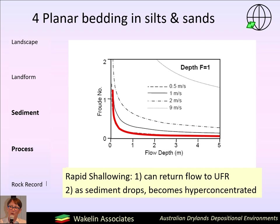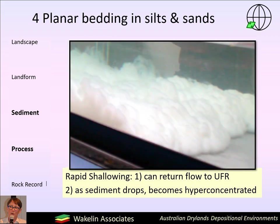The other thing that can happen is that as a flow suddenly loses energy — for example, if a flow becomes wide and shallow all of a sudden — it will lose competence and its sediments will drop out. What you might get then is a hyperconcentrated layer at the bottom of the water column where sediment deposition is taking place. Flume studies have shown that you can get upper flow regime planar bedding in fine sediments even under flow conditions where the rest of the flow is experiencing lower flow regime, fully turbulent flow.